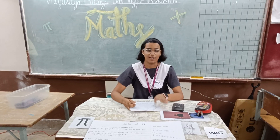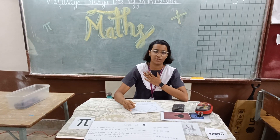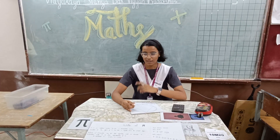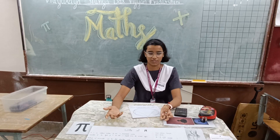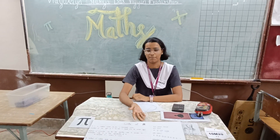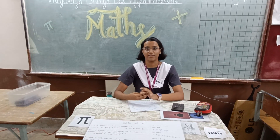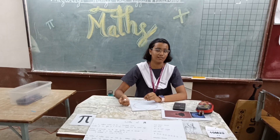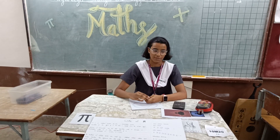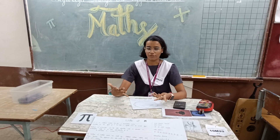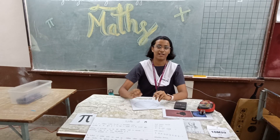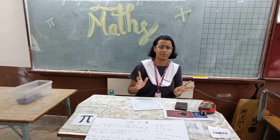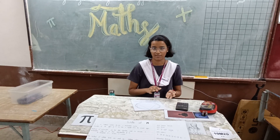Good morning everyone. I am Mr. Rajal from Tampa Bay and I am going to explain a project on Pi. Pi is a transcendental number. The proof for Pi being transcendental led to the fact that it is impossible to square a circle.